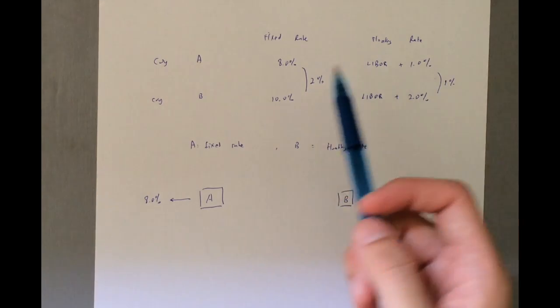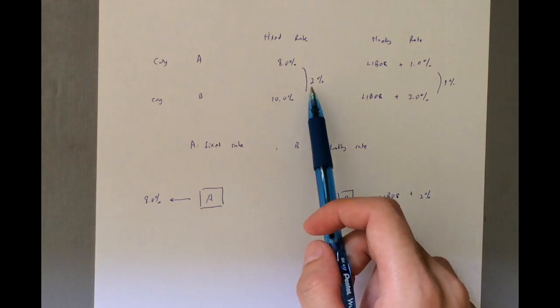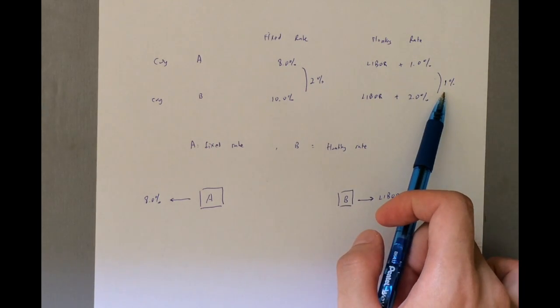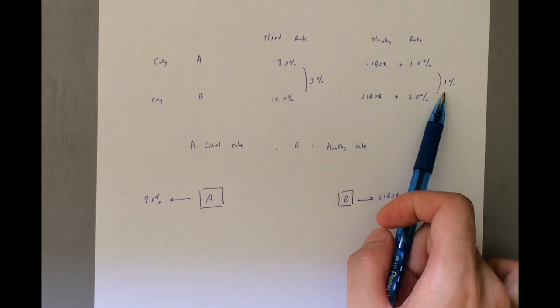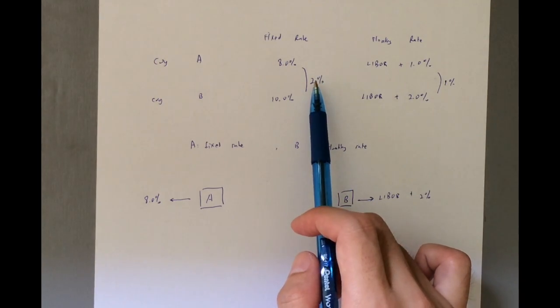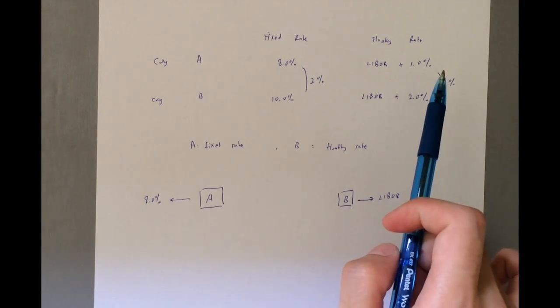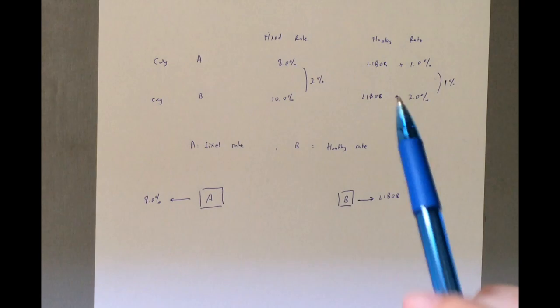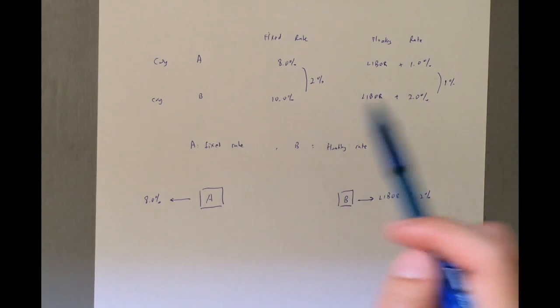The difference between these two is 2% and 1%. Alright, you got to take the difference between the differences. So the difference is 2 minus 1, so it's 1%. So this is a gain if they manage to swap among themselves of 1% instead of going to the bank directly.